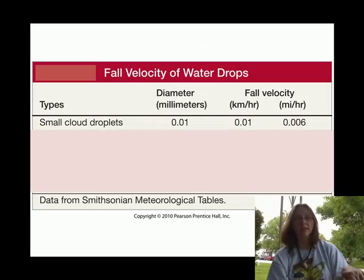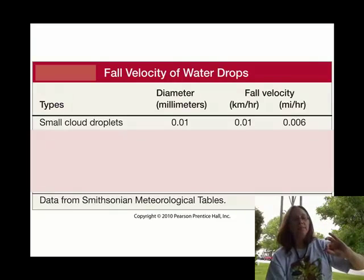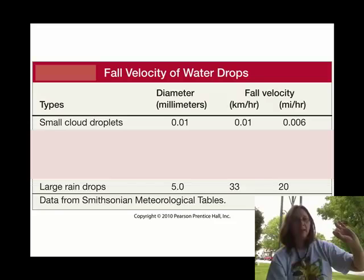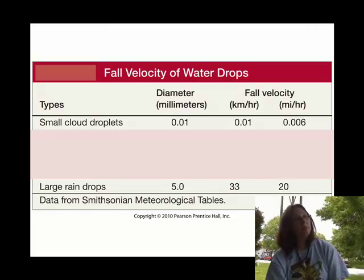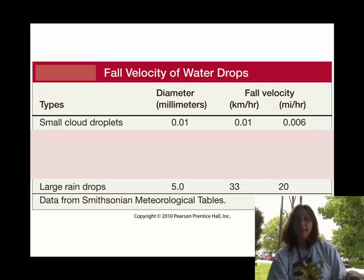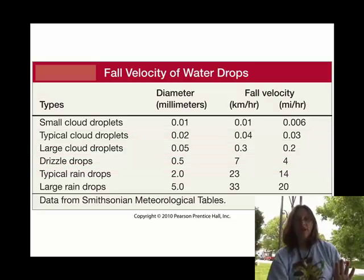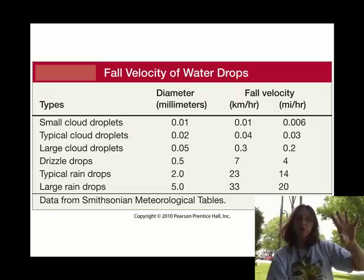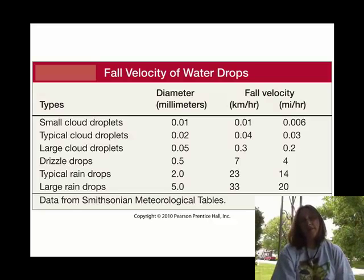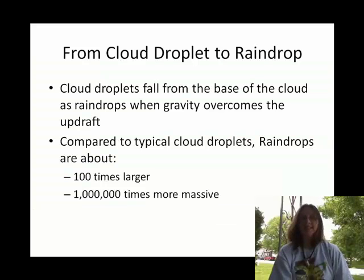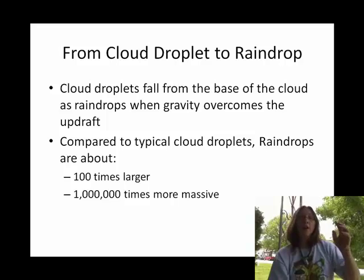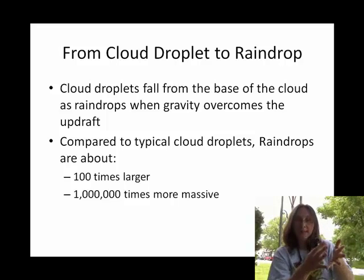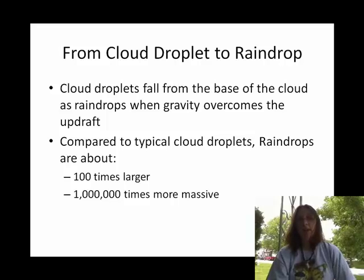Small cloud droplets have a terminal velocity of 0.006 miles per hour. Large raindrops — the ones ultimately going to smack you on the head — fall at a terminal velocity that maxes out at 20 miles per hour. Everything else falls somewhere in between. So you have an assortment of sizes of liquid particles within that cloud falling at an assortment of terminal velocities, and that is important to what we call the collision coalescence process of ultimately getting rain from a cloud.